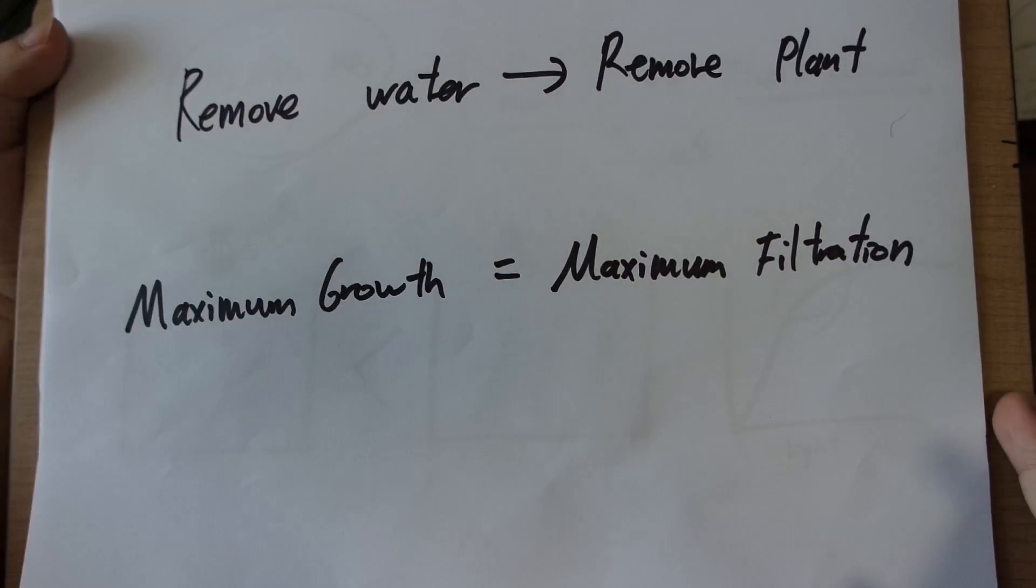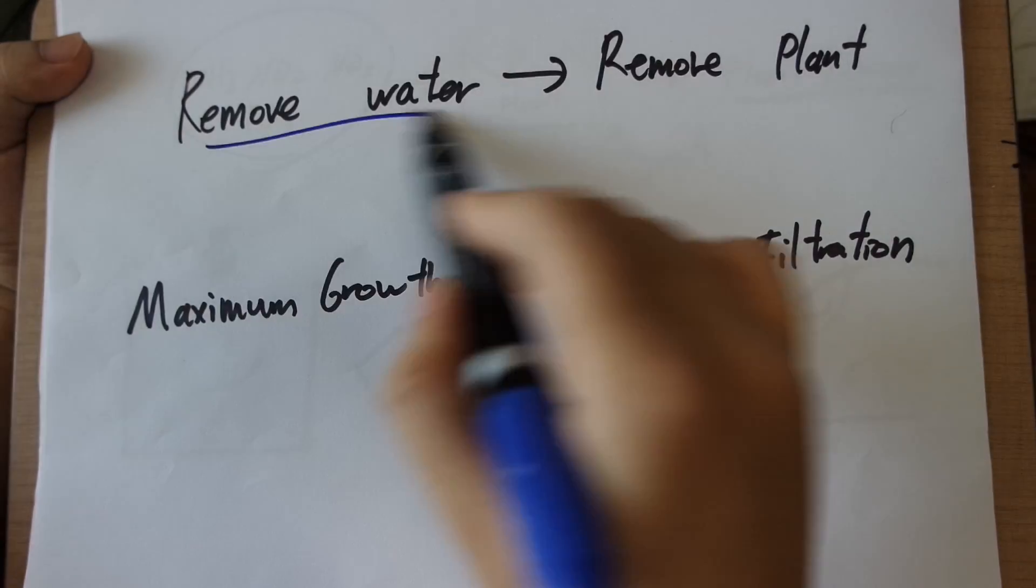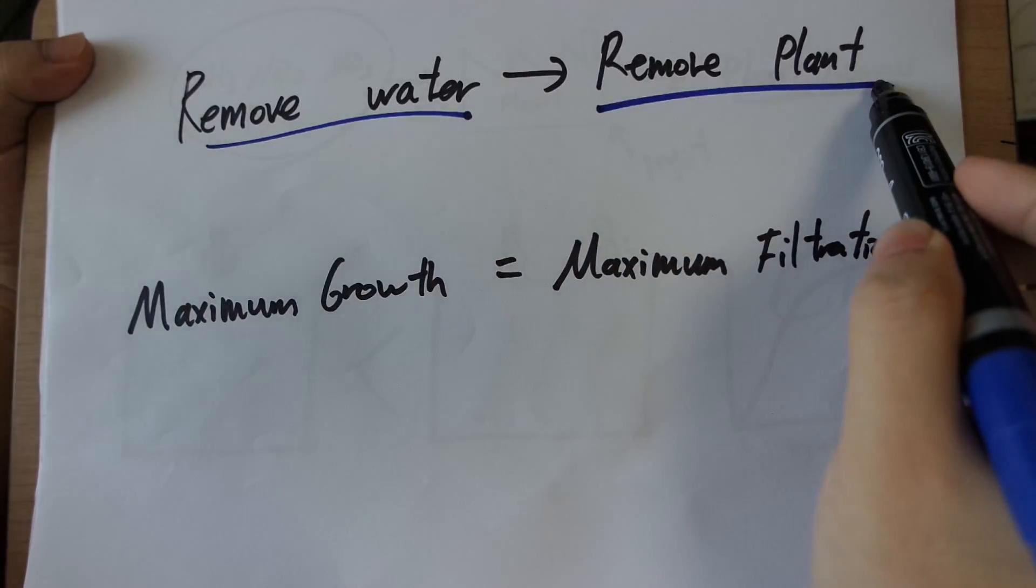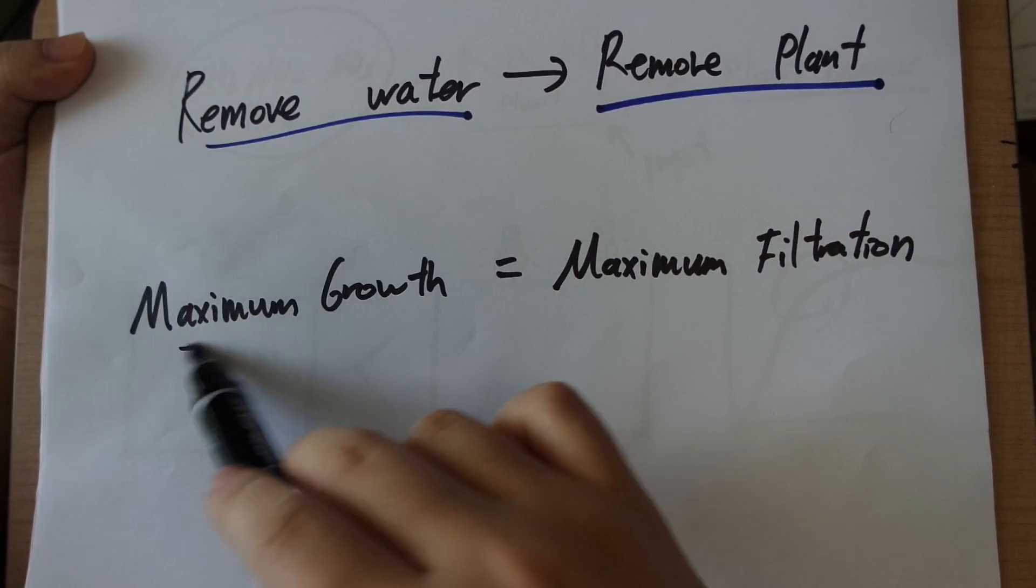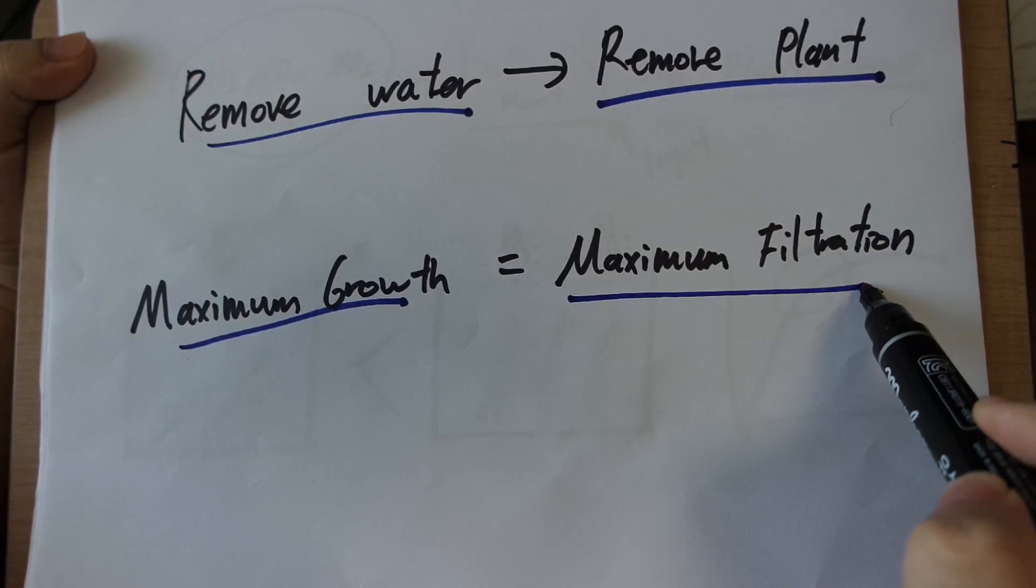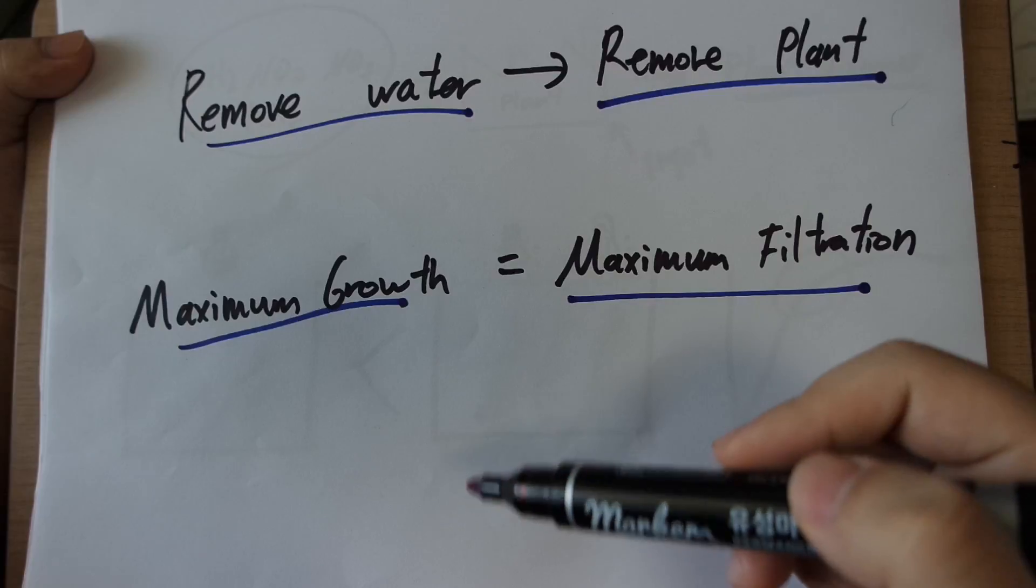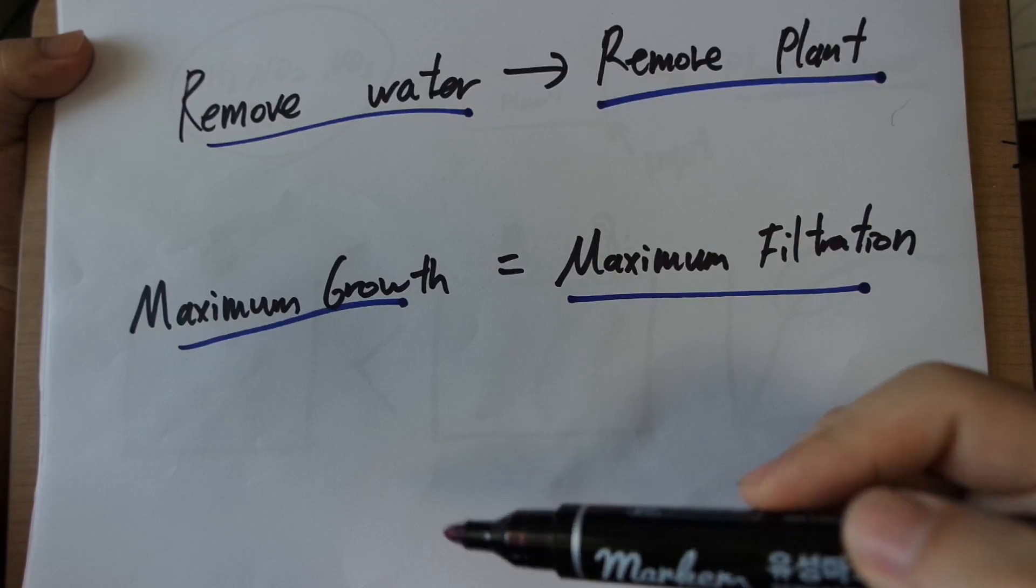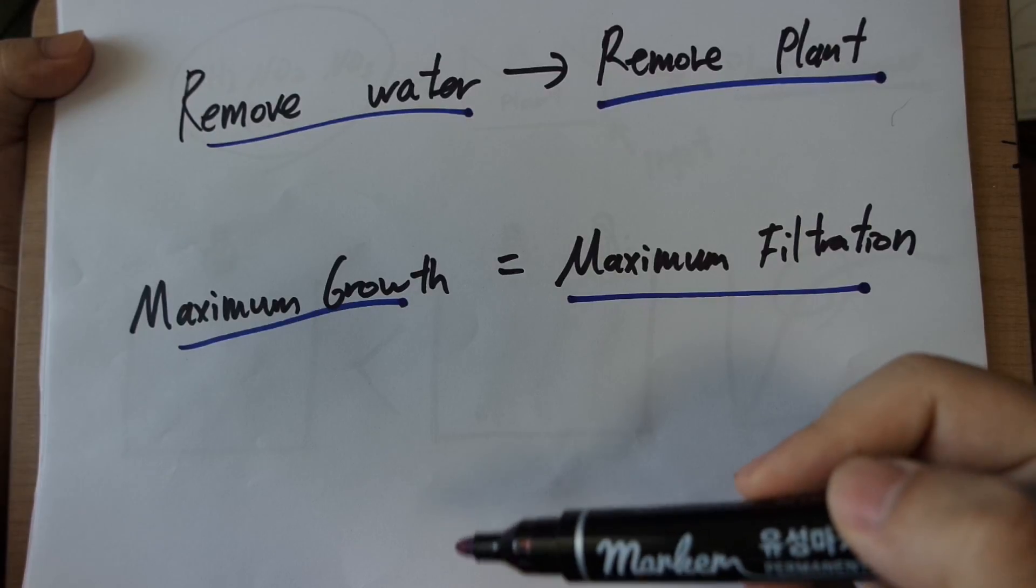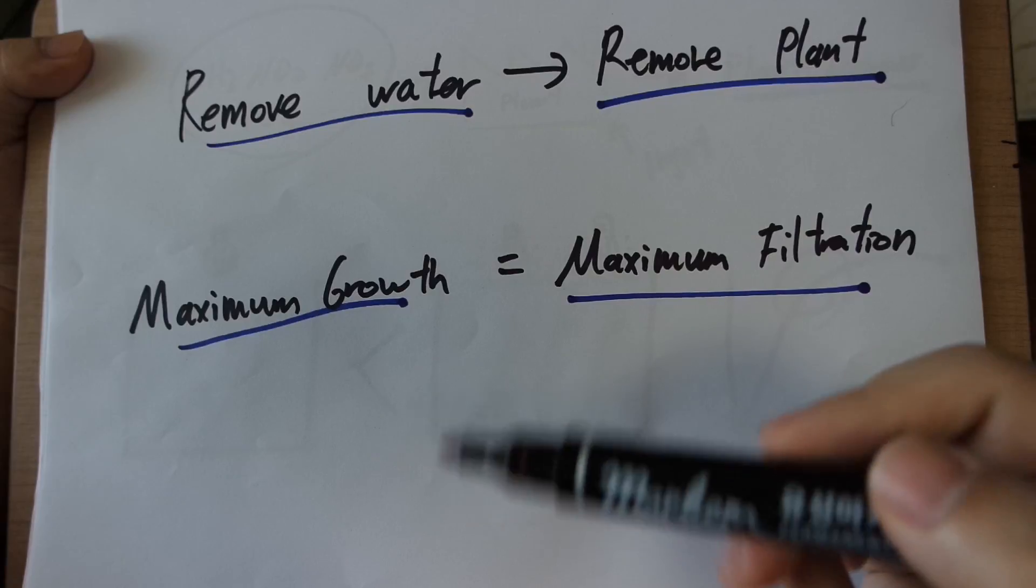So basically, this is how plants work. Instead of removing the water, you're removing the plants. And the maximum growth is maximum filtration. It's not just maximum amount of plants or number of plants. It's that you have to keep them at a density where they're growing fast and you have to give them enough light so that they can grow fast. So that's critical.